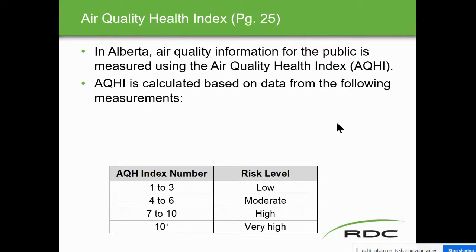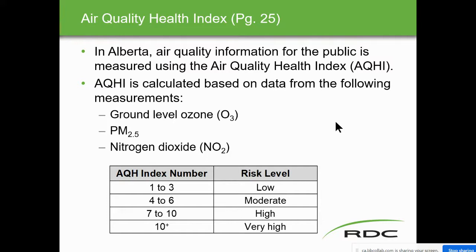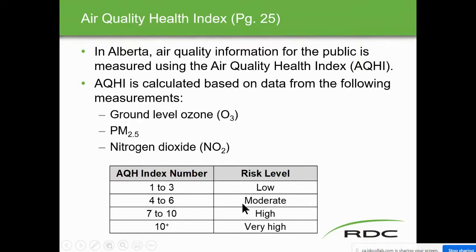Alberta air quality information for the public is measured by the Air Quality Health Index — AQHI. It's calculated based on ground-level ozone, particulate matter, and nitrogen dioxide. In parts per million: 1 to 3 is low risk, 4 to 6 is moderate, 7 to 10 is high, and 10 plus is very high. That's the Alberta Provincial Regulation Air Quality Health Index.